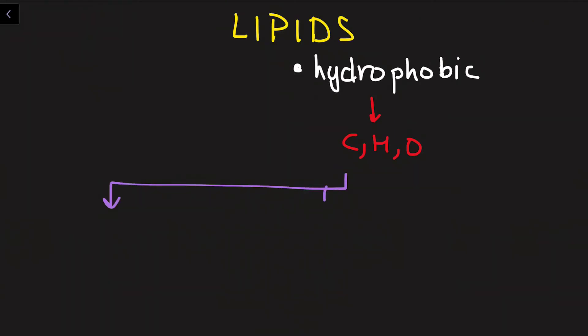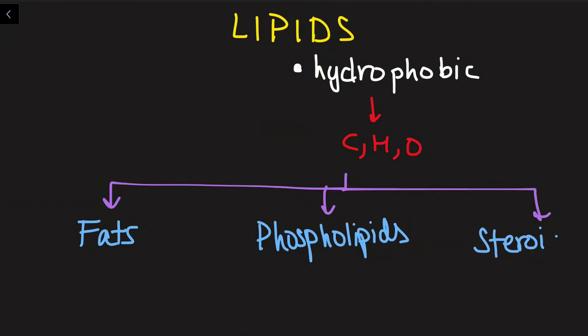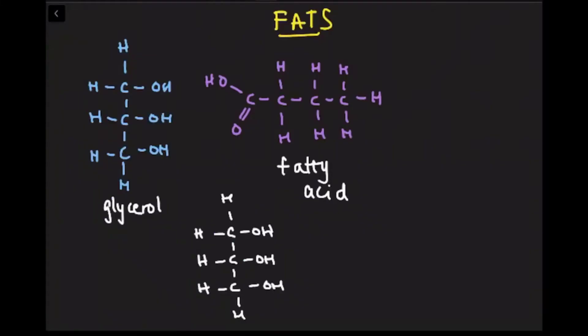Today we're going to be looking at three types of lipids: fats, phospholipids, and steroids. All right, let's get started. First, let's talk about fats.